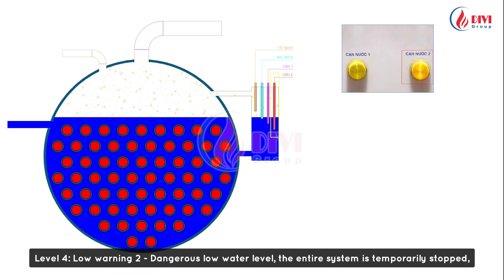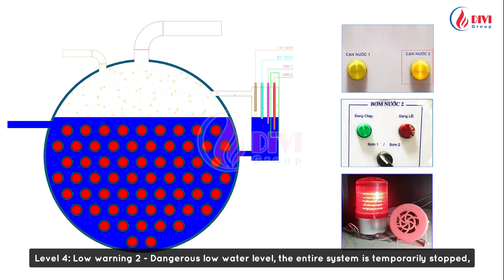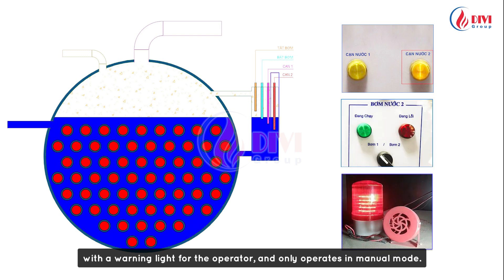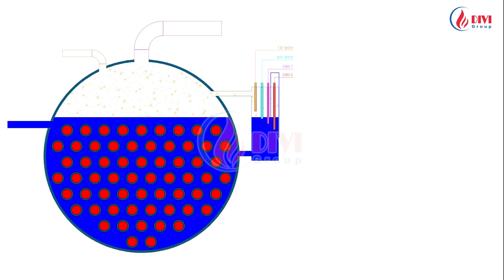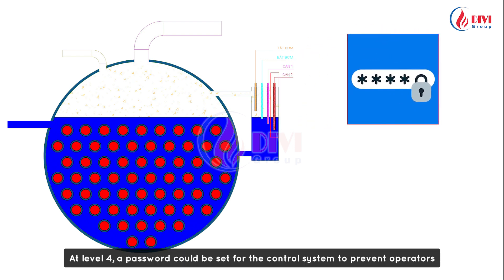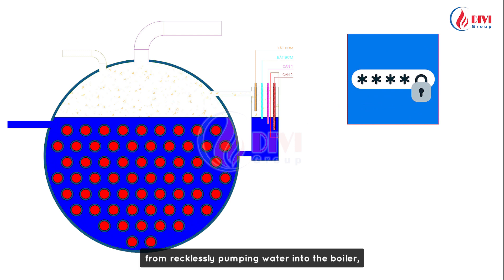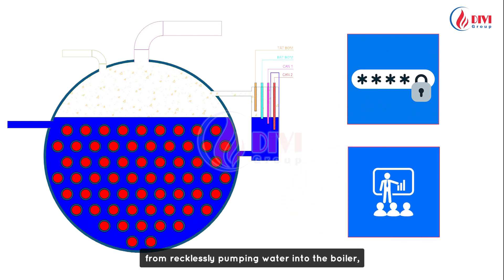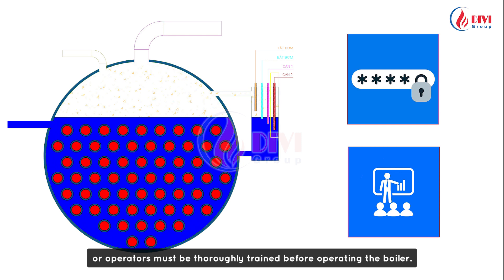Level 4 (low warning 2) — dangerous low water level: the entire system is temporarily stopped with a warning light for the operator, and only operates in manual mode. At level 4, a password could be set for the control system to prevent operators from recklessly pumping water into the boiler, or operators must be thoroughly trained before operating the boiler.